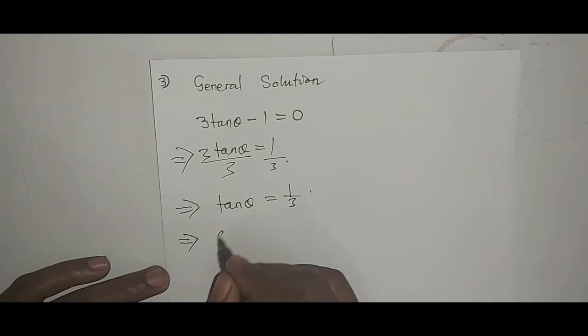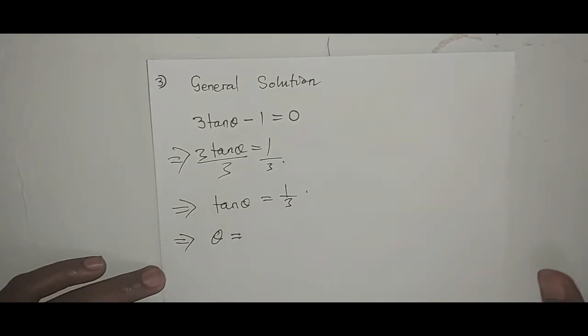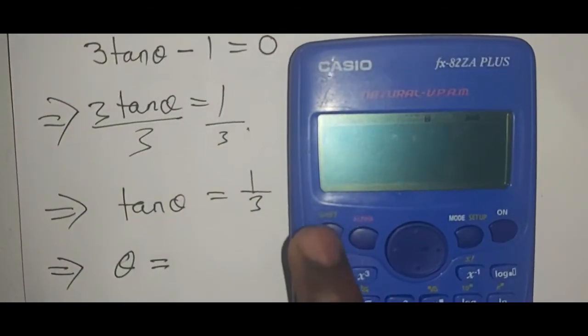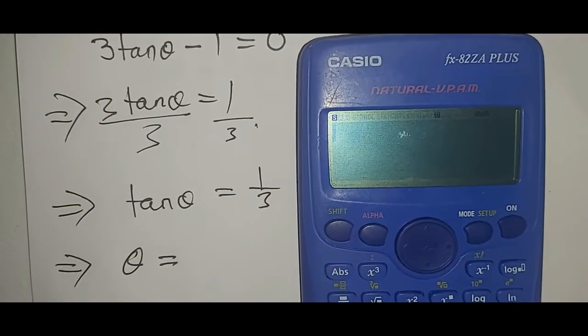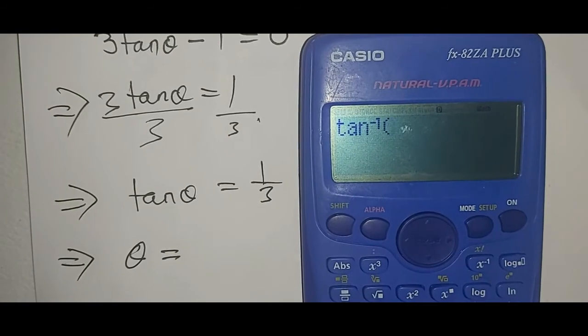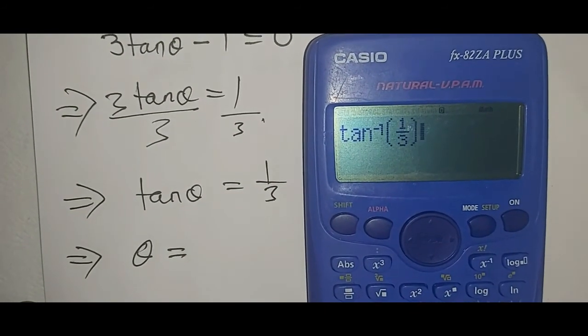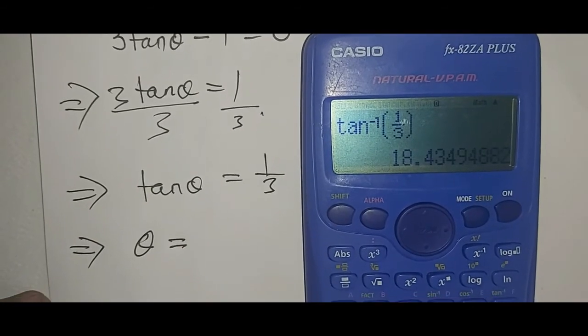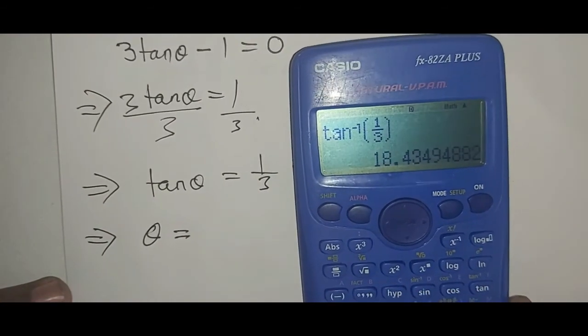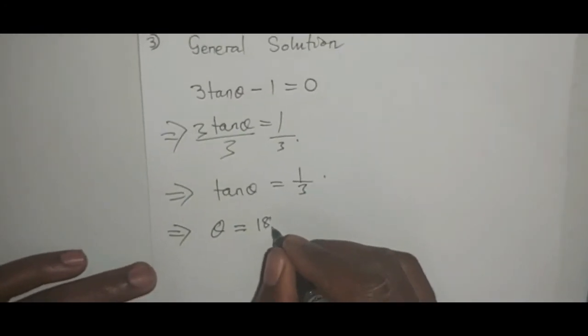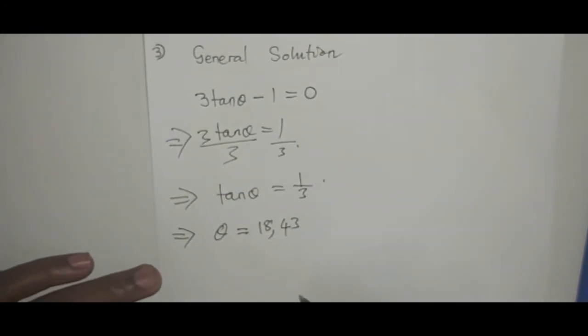From there I now say theta equals to - I find the angle now using my calculator. It will be shift tan of 1 over 3, which equals to 18.43 degrees. Therefore it will be 18.43 degrees.